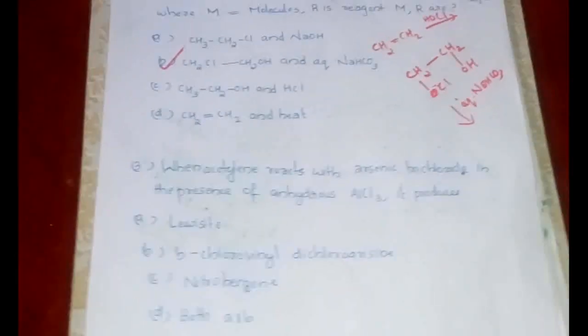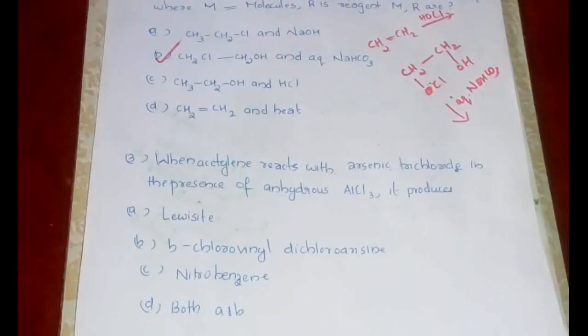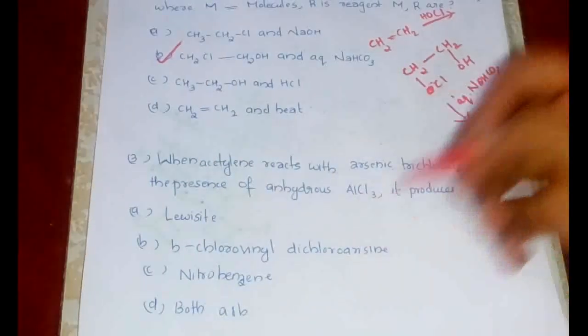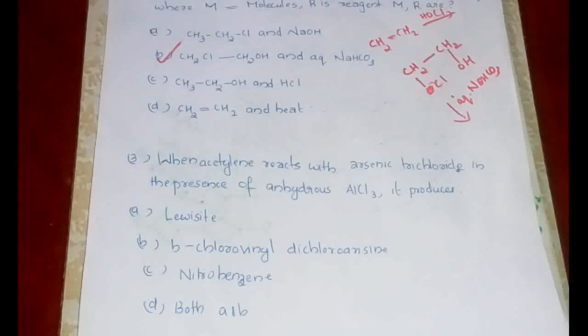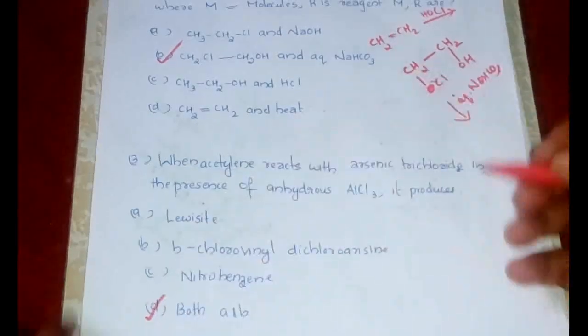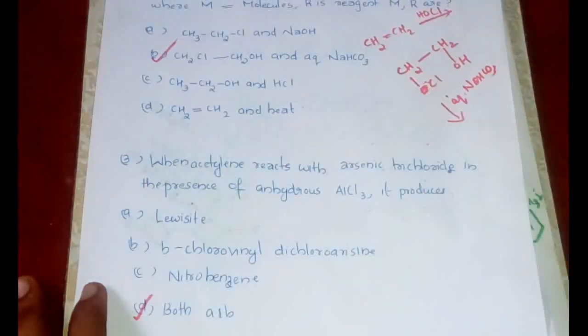Now the next question is one of the repeated questions: when acetylene reacts with arsenic trichloride in the presence of anhydrous AlCl3, it produces what? We are given lewisite, then chlorovinyl dichloroarsine (this is arsenic), then nitrobenzene, and finally both A and B. The answer is option D.